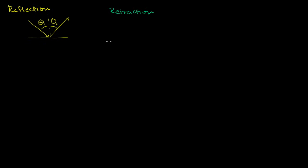You still have the light coming in to the interface between the two surfaces. Let's say the perpendicular is right there — I'll continue the perpendicular all the way down. And let's say we have the incident light ray coming in at some angle theta 1, just like that.